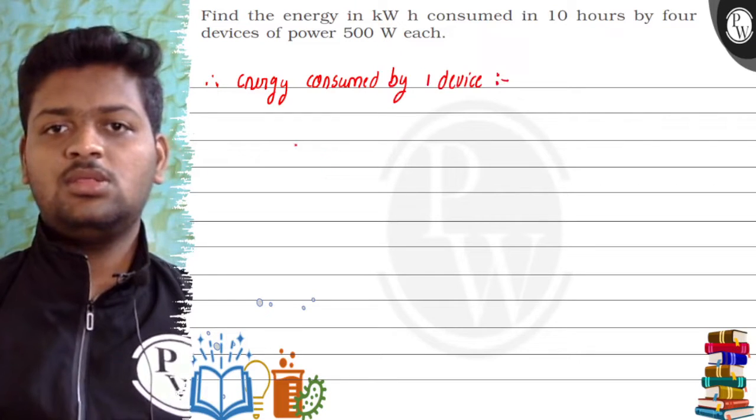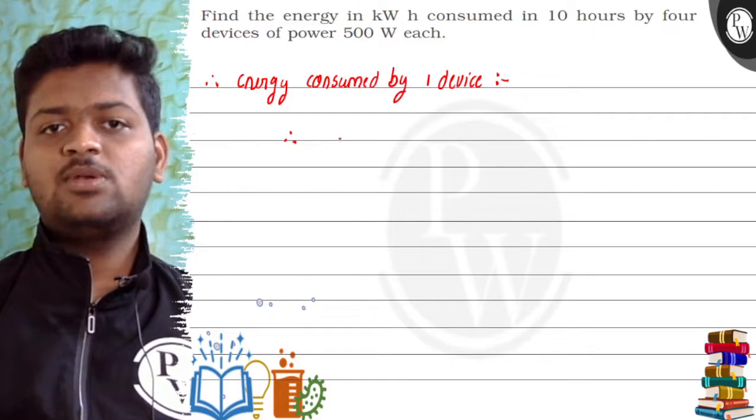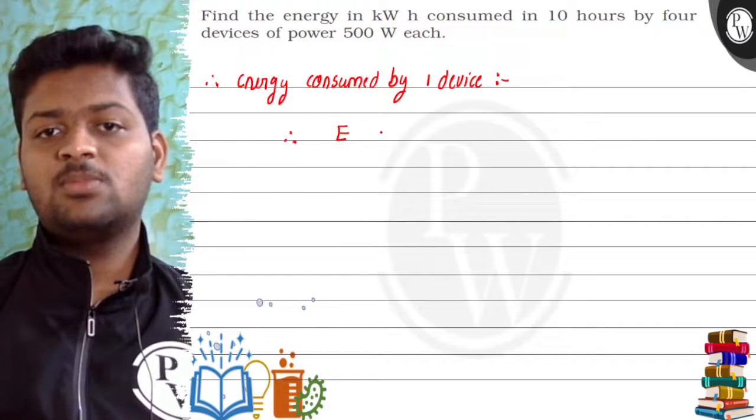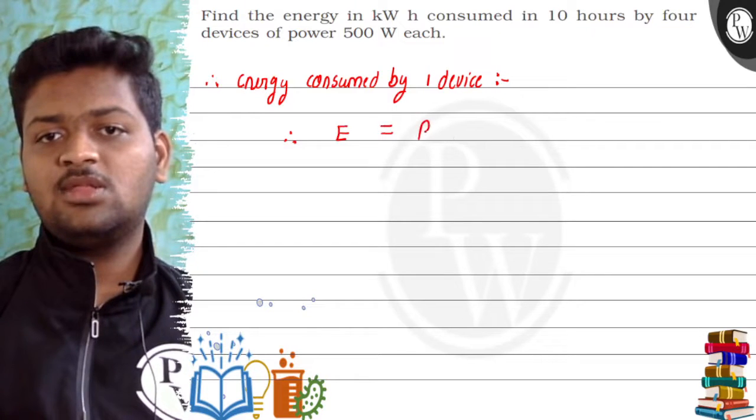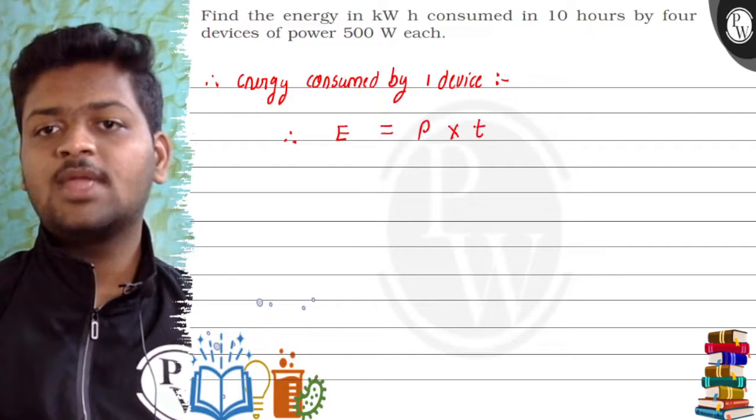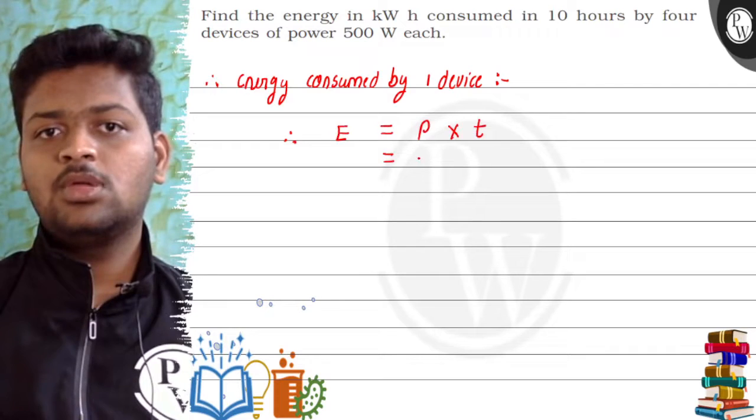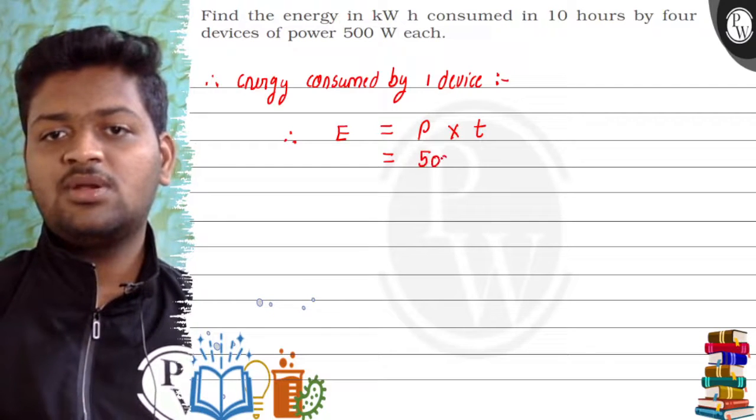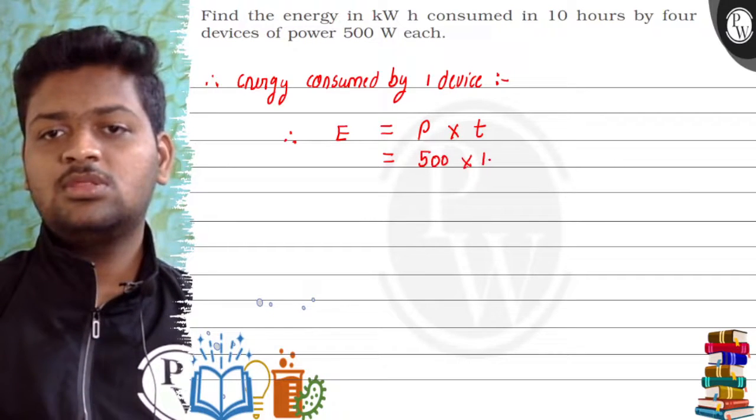Okay, so energy consumed by one device you will find it out by easy formula, basic formula that is energy is power into time t. Okay, so power is 500 watts and time is 10 hours.